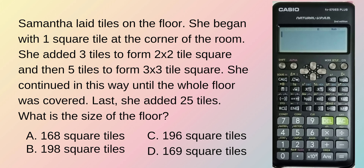What is the size of the floor? By inspection, it is an arithmetic progression. Why? Because we have a common difference of 2.